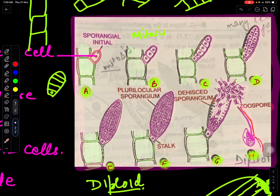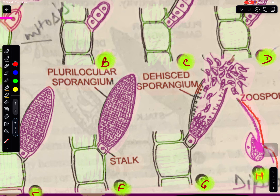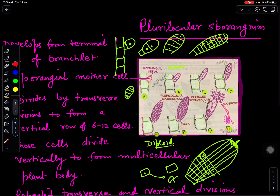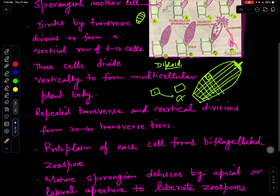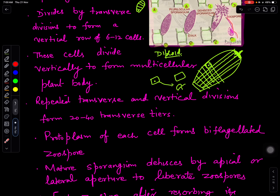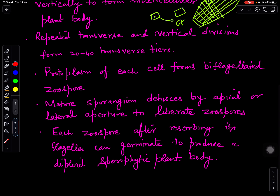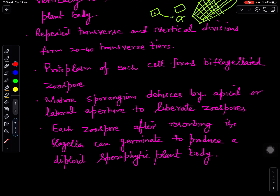It will again enlarge and divide, and then divide by vertical division. Ultimately this gets converted to a plurilocular sporangium in which many chambers are present — that is why it is called plurilocular. Each cell will undergo metamorphosis to form a zoospore. Later, the sporangium can rupture to release a large number of zoospores. If this is from a diploid thallus, all zoospores will be diploid in genetic constitution. The structure of the zoospore is the same as discussed earlier.